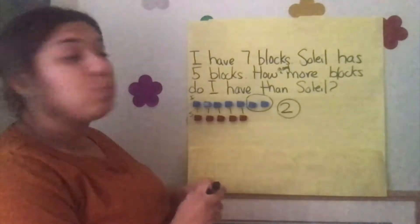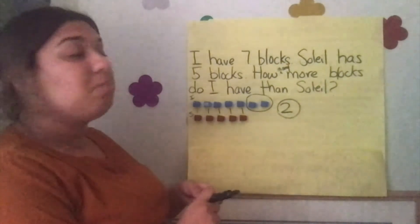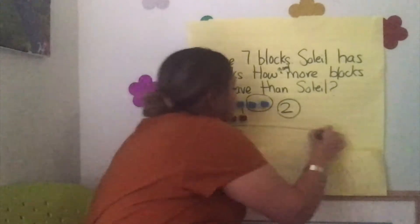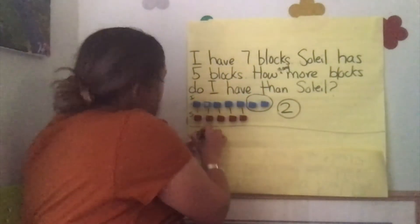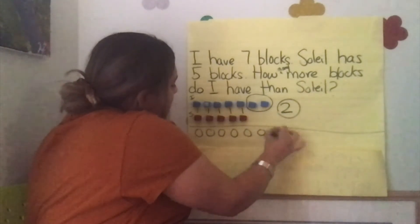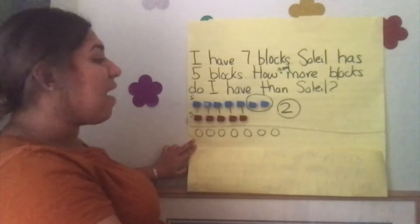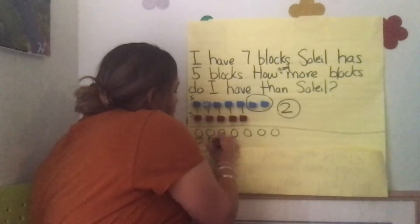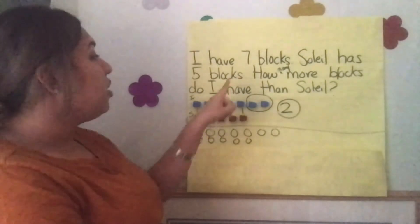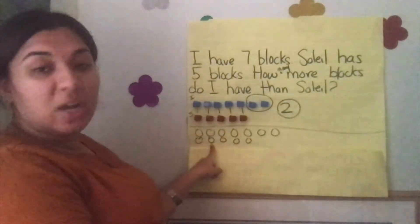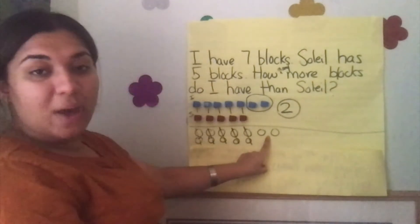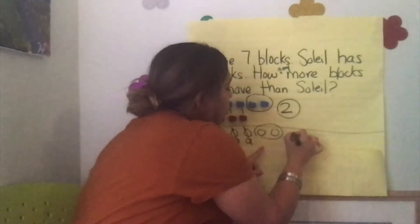Let's go ahead and look at this with circles. I have seven blocks — let me draw a nice neat line and draw the circles: one, two, three, four, five, six, seven. And how much does Soleil have? Soleil has five blocks: one, two, three, four, five. So how many more blocks do I have than Soleil? Let's cross out what we both have: one, two, three, four, five. How many more do I have than Soleil? I have two more.